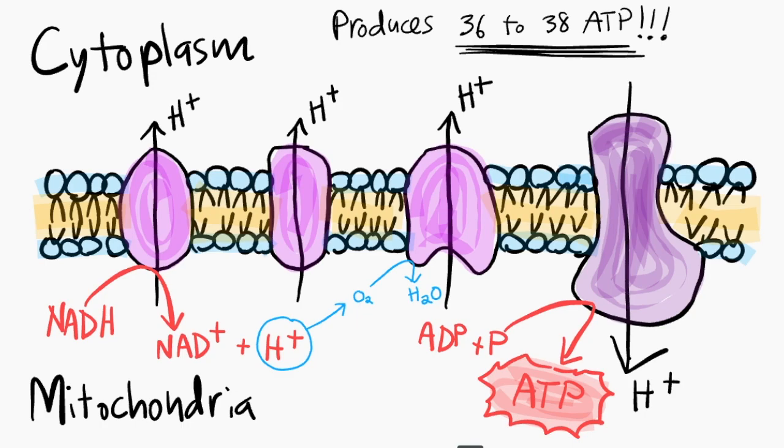With the final stage of the process being oxygen, you could describe this pathway as aerobic. The final result of cellular respiration is a whopping 36 to 38 ATP molecules.